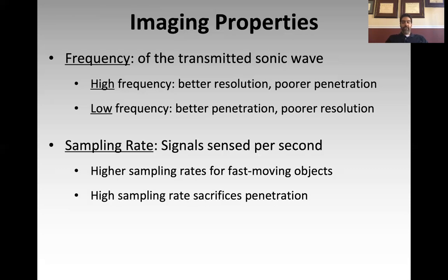The second imaging property is sampling rate. The crystal goes back and forth between being a transmitter of sound and a receiver of sound. The rate at which the machine switches the crystal between transmitting and listening is the sampling rate — the faster it switches, the higher the sampling rate. In general, the purpose of a high sampling rate is the ability to look at fast-moving objects with a high degree of fidelity. For example, if you're trying to look at a valve on a tachycardic heart, a higher sampling rate gives you the ability to do that with high fidelity. You do sacrifice some penetration with a high sampling rate.